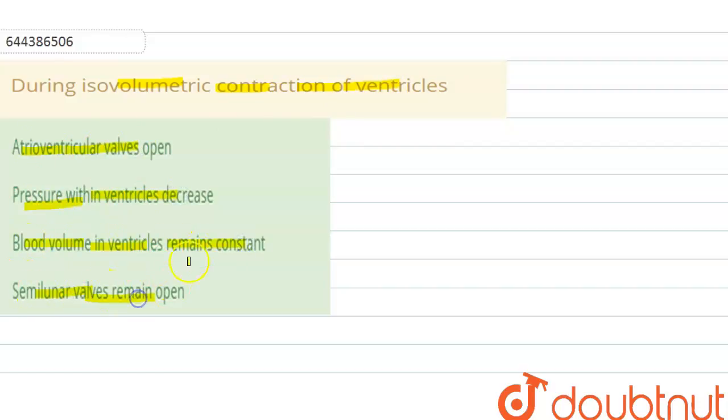So what happened during the isovolumetric contraction? Isovolumetric means during the contraction, the ventricles volume will be the same during the isovolumetric contraction, and what other things will be happening during this.